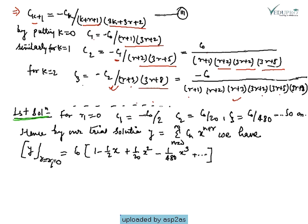For the first solution with r₁ = 0: c₁ = -c₀/(1·2) = -c₀/2. Similarly with r₁ = 0, c₂ = -c₁/(2·5) = -c₁/10. Since c₁ = -c₀/2, we get c₂ = c₀/20. In this way we can find c₃, c₄, and onwards.